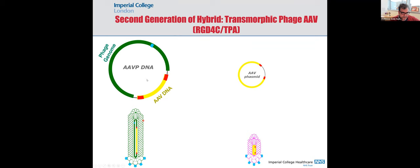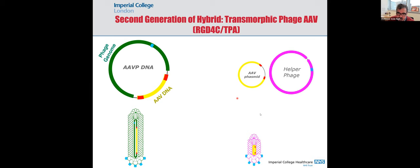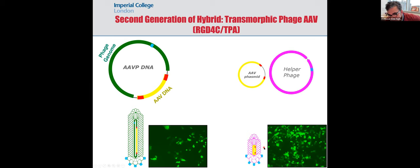The breakthrough: in the first generation, the phage capsid packages a hybrid genome of both phage DNA and AAV DNA. In the therapeutic particles, we don't need the phage genome — so we decided to get rid of it. We inserted an origin of replication of phage into the AAV genome to allow it to replicate in bacteria and get packaged, then used a helper phage to provide the capsid. The resulting small particles showed a dramatic increase in gene delivery. This was just accepted last week in EMBO Molecular Medicine.